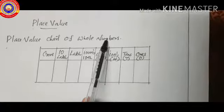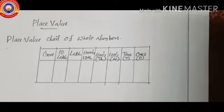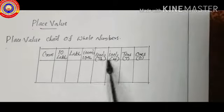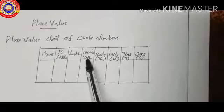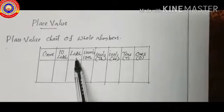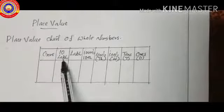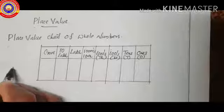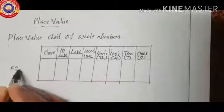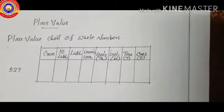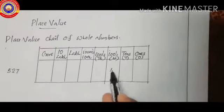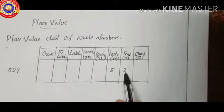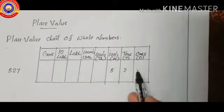Students, look at the place value chart of whole numbers. The place values of whole numbers are ones, tens, hundreds, thousands, ten thousands, lakh, ten lakh, crore, etc. Let's see an example: 527. Here, 5 is in the hundreds place, 2 is in the tens place, and 7 is in the ones place.